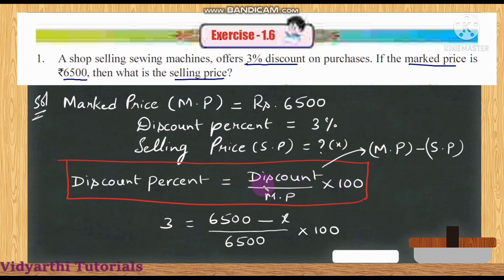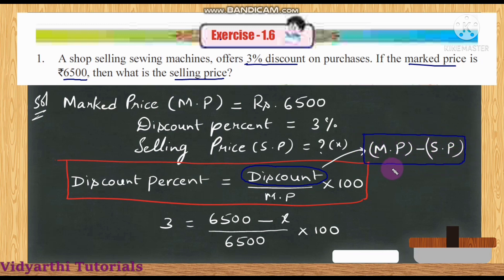Everyone should memorize this formula. Discount is market price minus selling price. So if we subtract the selling price from the market price, we get the discount.